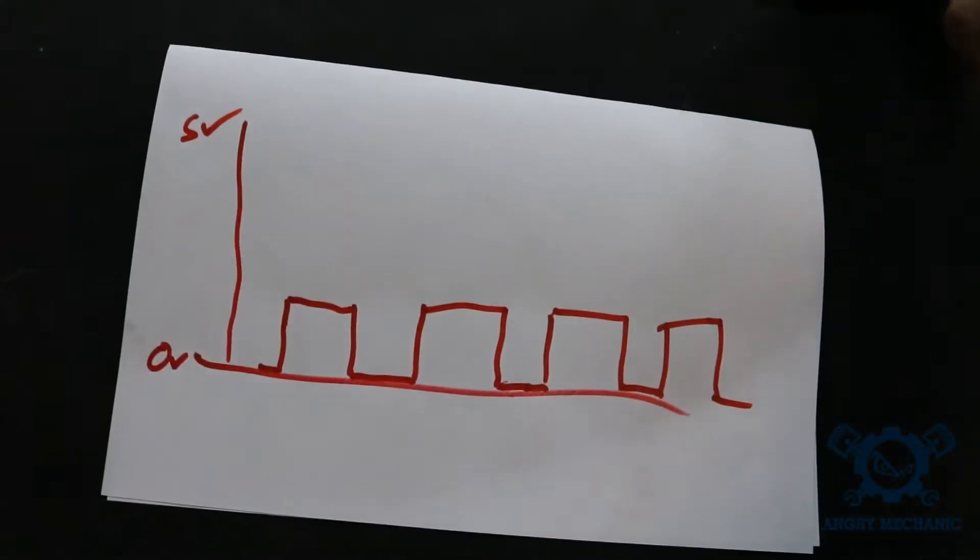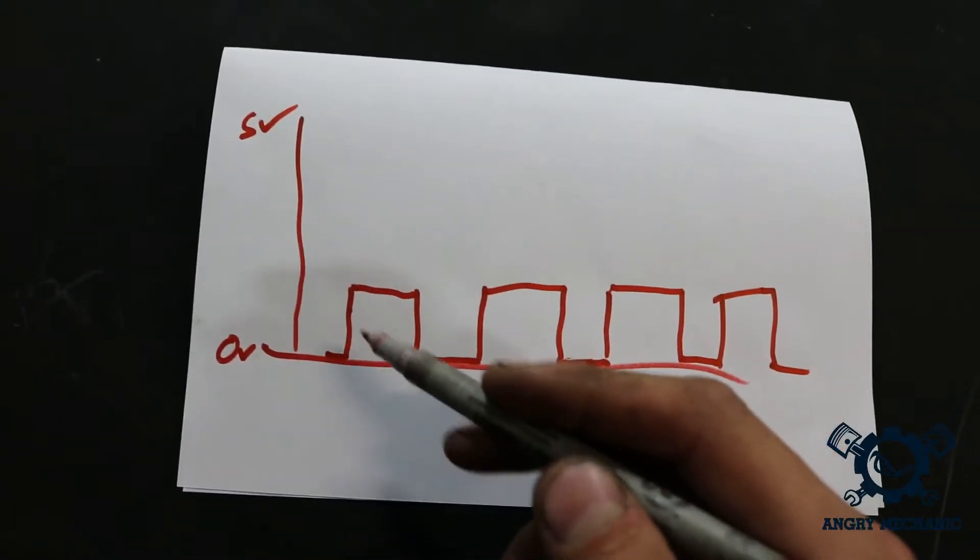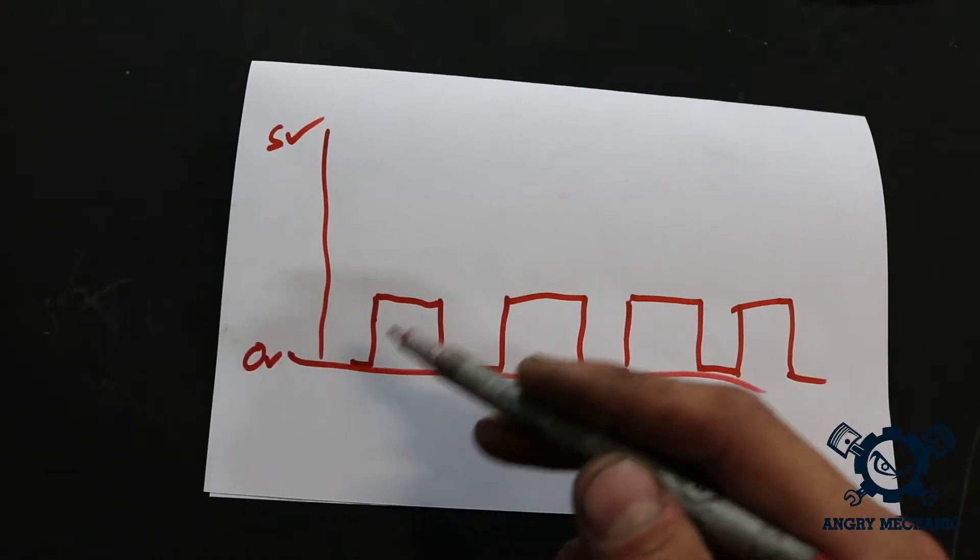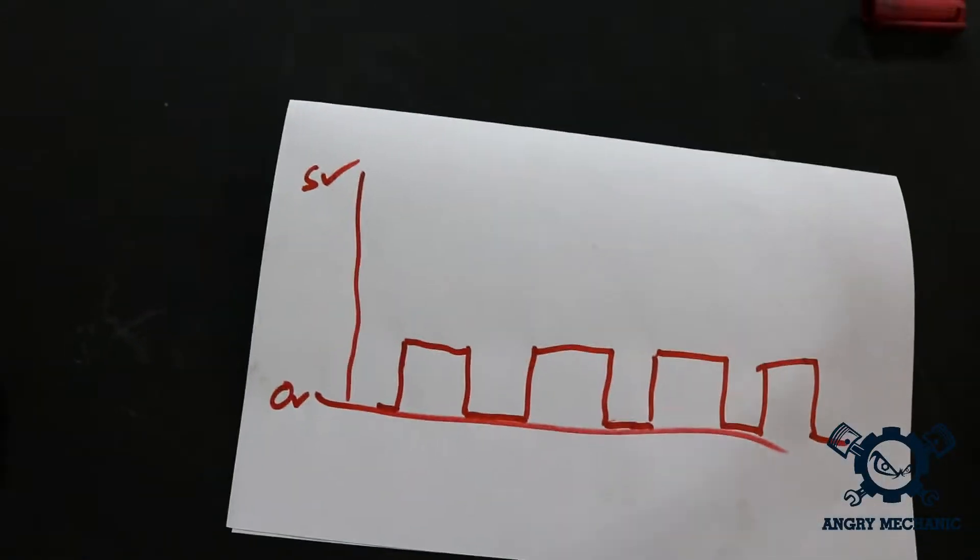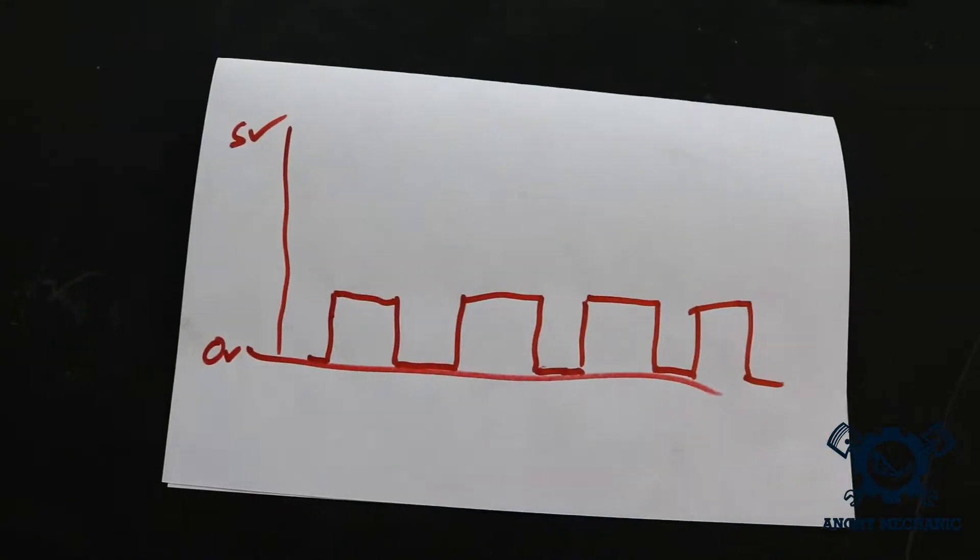So as you can see here, voltage not to scale, but it's a clean square wave signal. It's either on or off. That's why we call it digital. It's on or off, on or off, right? So that's pretty much a square wave signal.